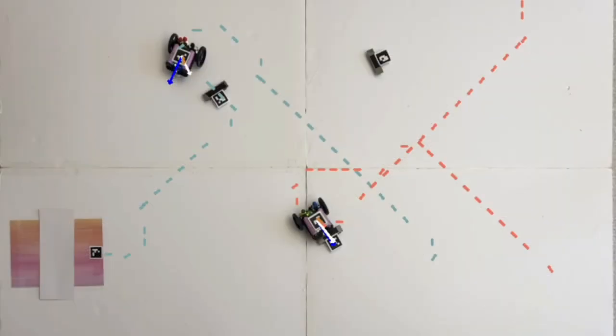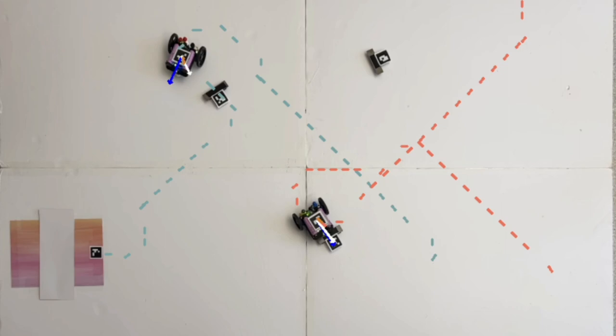The computer vision system helps us localize different objects in our field. The computer vision figures out the positions of the robots, the pallets, and the goals, and feeds it to the planner system which figures out an appropriate path for the robots to take to get to the pallets and then eventually get to the goals.